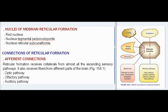Nuclei of midbrain reticular formation include: red nucleus, nucleus tegmental pedunculopontis, and nucleus reticularis subcuneiformis. Connections of Reticular Formation — Afferent Connections: Reticular formation receives collaterals from almost all the ascending sensory pathways. It also receives fibers from different parts of the brain.